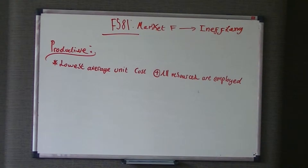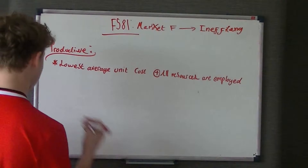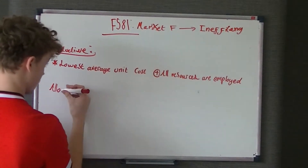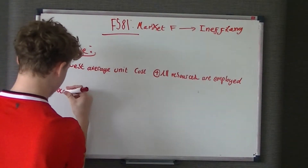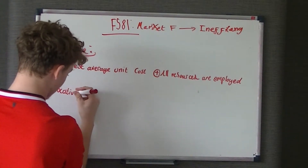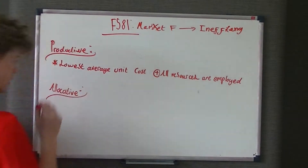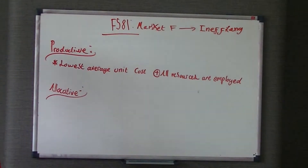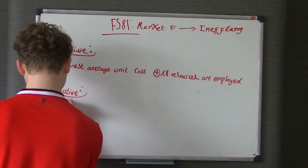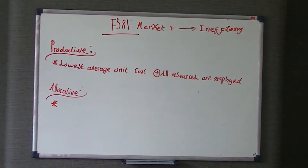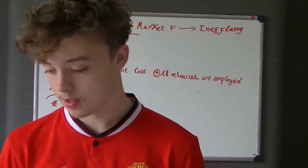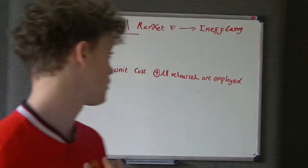We also talked about the consumer's preferences, and that is something called allocative efficiency. So we've done the lowest average cost and resources employed. Allocative efficiency is the next one. We're basically talking about the preferences of the consumers being met.